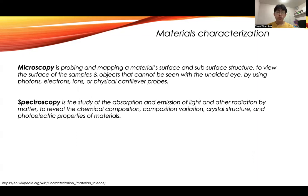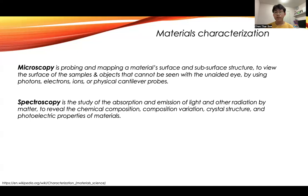So there are many characterization processes, but to put it simply, we have two main types: the microscopy technique and the spectroscopy technique. Microscopy is the probing and mapping of the material surface and sub-surface structure — to see the surface of the sample and objects that cannot be seen by the naked eye. In microscopy, we use many different probes like photons, electrons, ions, or physical cantilever probes on the surface of the material.